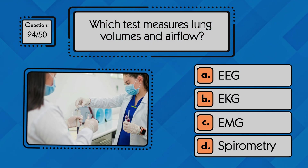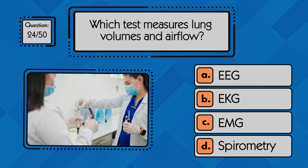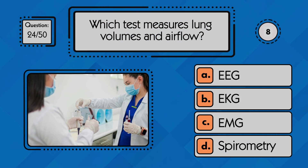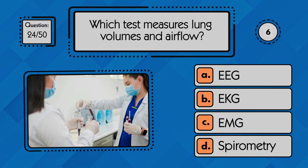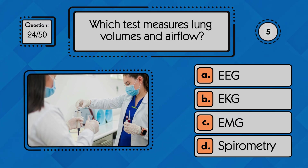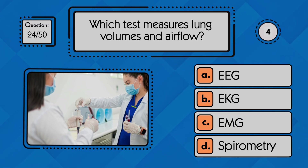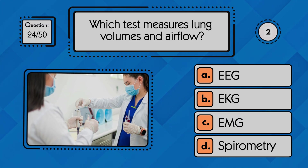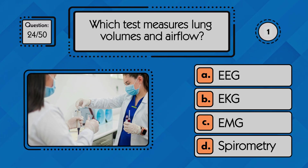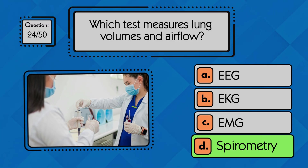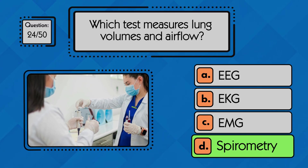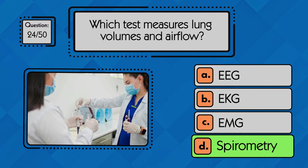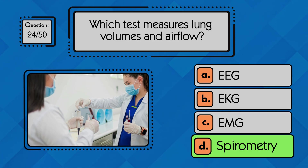Which test measures lung volumes and air flow? Spirometry is used to measure lung volumes and air flow, helping assess overall respiratory function.